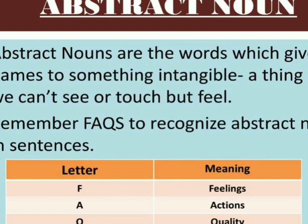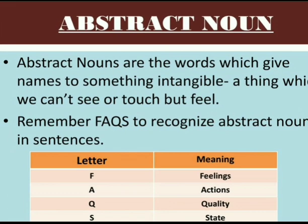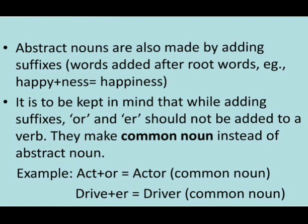Feelings, actions, quality, or state — these things help us to recognize abstract noun in a sentence. Abstract nouns are also made by adding suffixes. Suffixes are the words added after root words. For example, happy plus -ness: happy is the root word, -ness is the suffix, so happiness is the abstract noun.